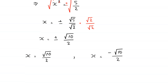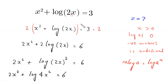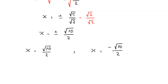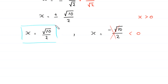As discussed earlier, x is in the logarithmic function, so x must be greater than 0, because log of 0 and negative numbers is undefined in the real number system. The value x equals negative root 10 over 2 is less than 0, so it is rejected. The final solution is x equals root 10 over 2.